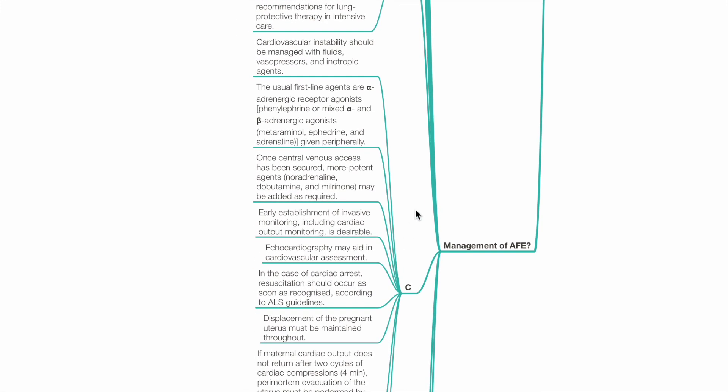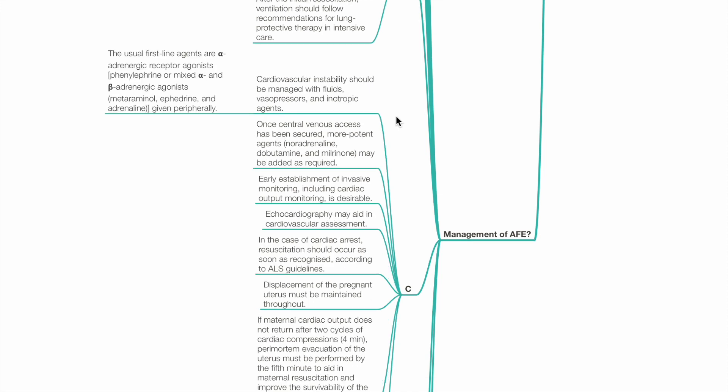Cardiovascular: Cardiovascular instability should be managed with fluids, vasopressors and inotropic agents. Usual first-line agents are alpha-adrenergic receptor agonists such as phenylephrine, or mixed alpha and beta-adrenergic agonists such as metaraminol, ephedrine and adrenaline, given parenterally. Once central venous access has been secured, more potent agents such as noradrenaline, dobutamine and milrinone may be added as required. Early establishment of invasive monitoring including cardiac output monitoring is desirable. Echocardiography may aid in cardiovascular assessment.